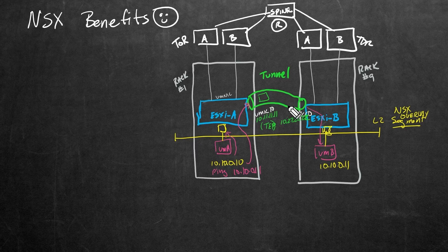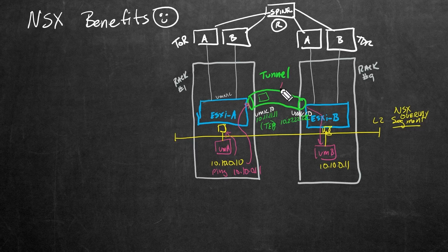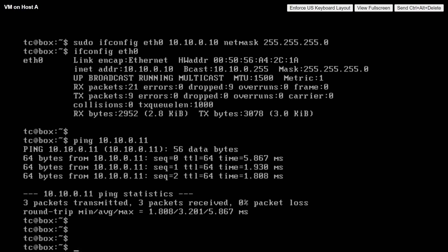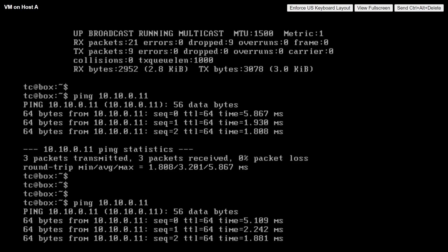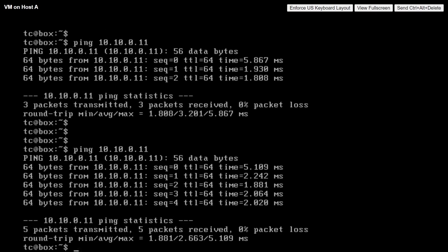Sometimes it's a good idea to verify that what we think is happening is really happening. Through the magic of some packet captures, let me put a packet capture on this, send some traffic over again, and take a close look at the traffic as it crosses the network. In the background, I've got a packet capture running — the same ping from VM on Host A to the IP address of the VM on Host B. We'll let that go a few times, do a Ctrl+C to stop it, and then take a look at the packet capture.